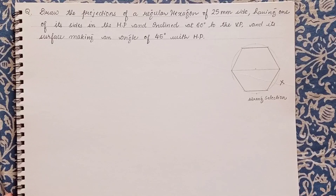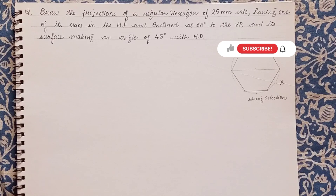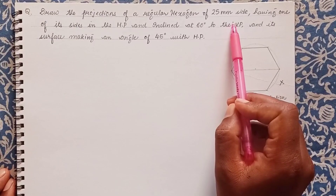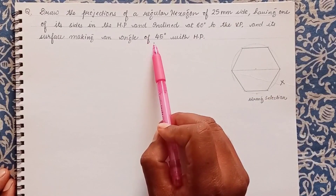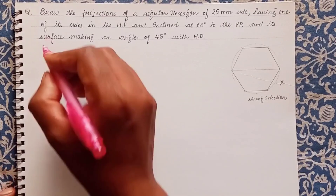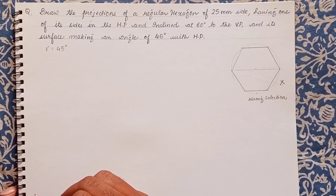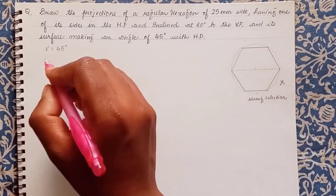Hello dear friends, welcome to my channel. Today we'll see another problem of projection of a plane. We have this question: draw the projection of a regular hexagon of 25mm side, having one of its sides in the horizontal plane and inclined at 60 degrees to VP, and its surface making an angle of 45 degrees to HP. So the surface inclination angle gamma is 45 degrees with HP. If the inclination is with VP, then it will be angle delta. We have 60 degrees, which is phi, the surface inclination with VP — it is the true length making an angle with VP.